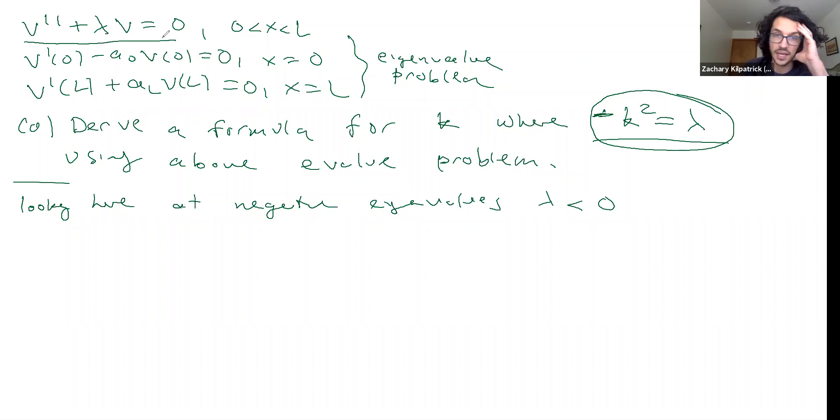Okay, so the first thing you should do is just to plug in to the ODE. So what happens when I do that? Well, I have v'' - k²v = 0 in this case, so I have v'' = k²v, and the solutions to this are v = Ae^(kx) + Be^(-kx).